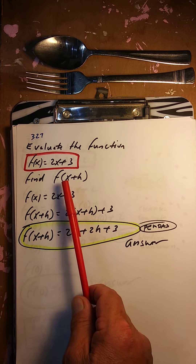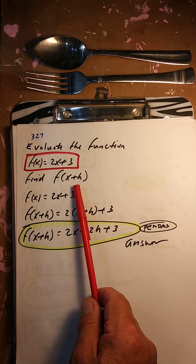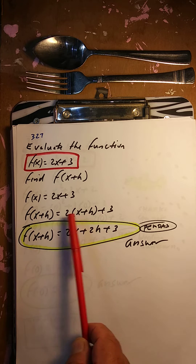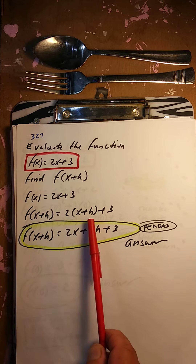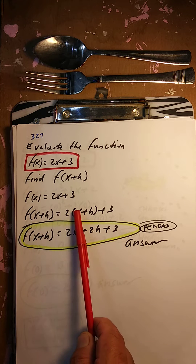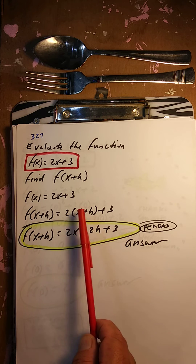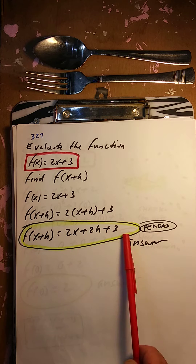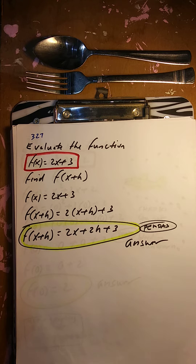Evaluate the function f of x equals 2x plus 3, find f of x plus h. We're going to put x plus h in for the x. So 2 times x is 2x, 2 times h is 2h, plus 3. No more like terms — we're done.